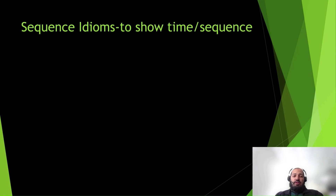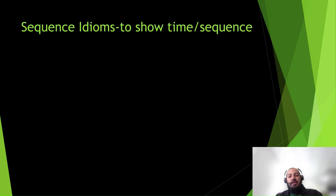Let's take an example. The first kind of idiom we have here is sequence. Sequence idioms are used to show time sequence — what is the timeline of it? Any particular time, like in the beginning or at the end. So whenever you are talking with reference to time or a sequence, you can use a few of these idioms. Whatever idioms we cover here, you can bring them into your daily practice to perform well in writing or in speaking section. Let's see what all sequence idioms we have.